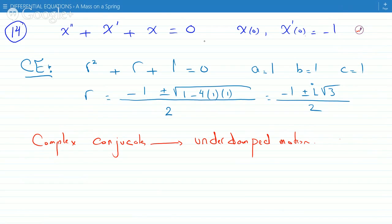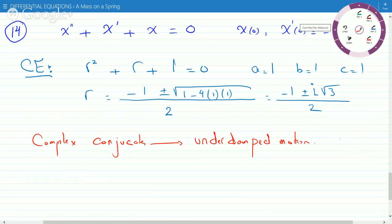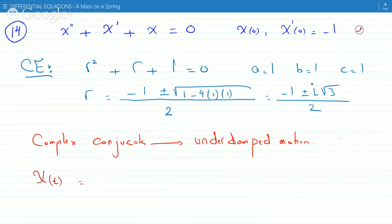And so our solution for the differential equation will be... So this is the same thing as -1/2 plus or minus i√3/2. So the real part is the power of the exponential, and the imaginary part is the sines and cosines.